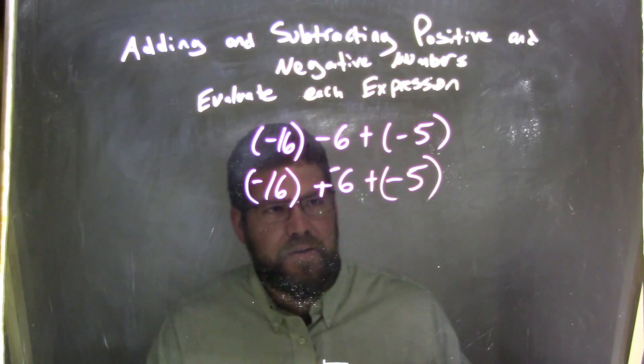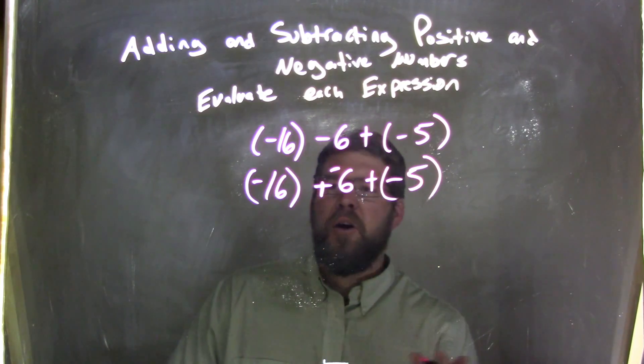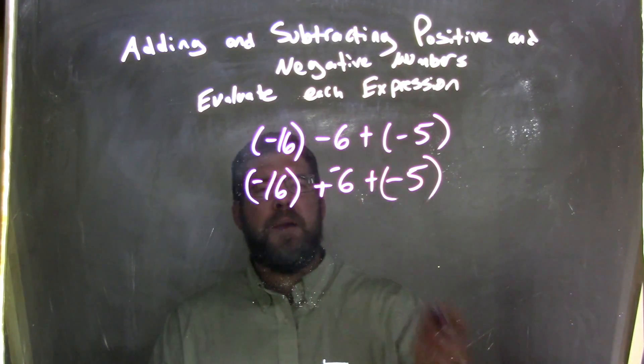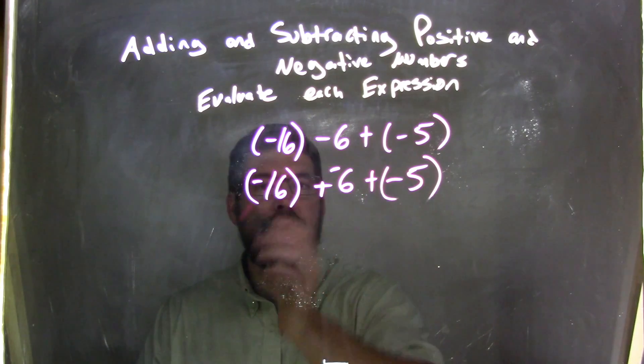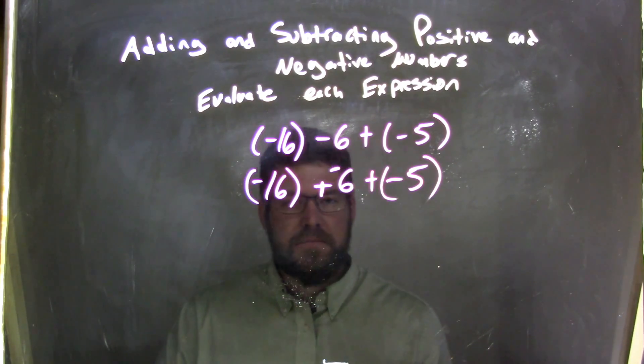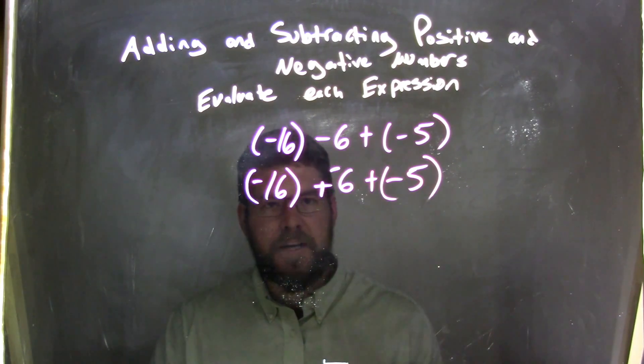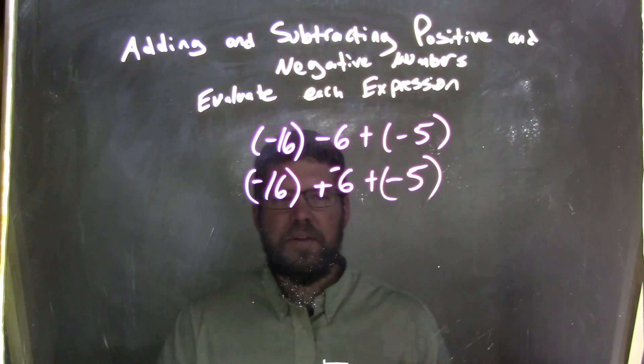So negative 16 plus negative 6. We have to combine these numbers together. It really doesn't matter the order in which you combine them because they're all negative—one, two, three—and we're adding them all together. The commutative property states that we can rearrange it however we want and solve parts of them first.